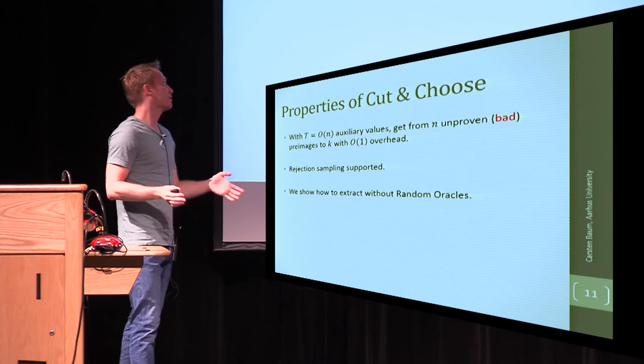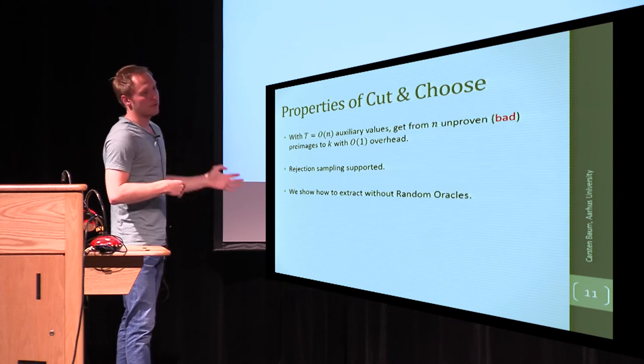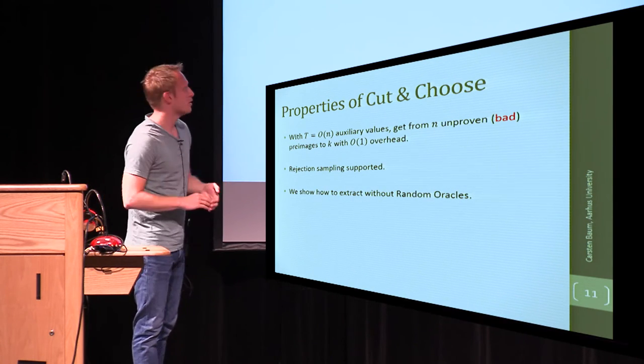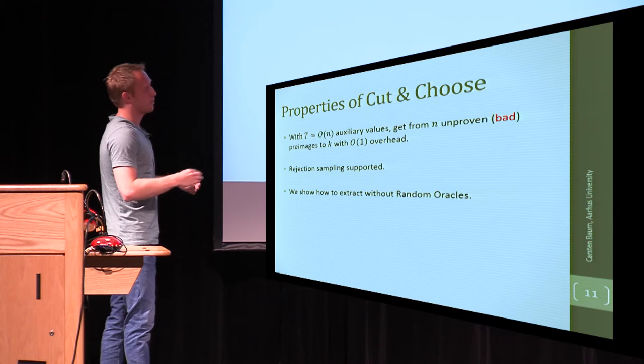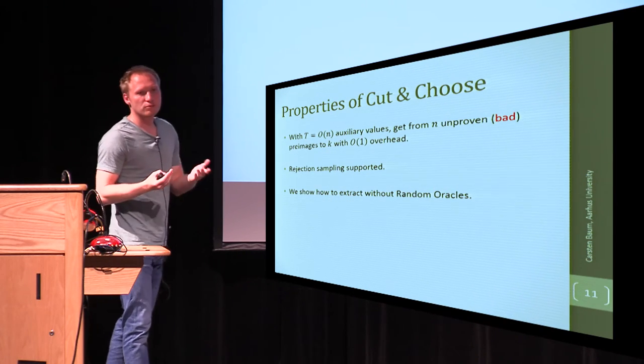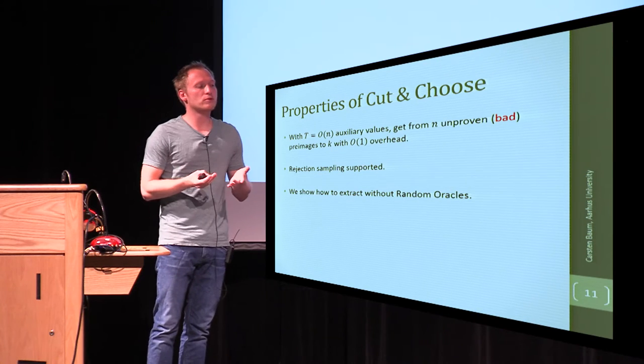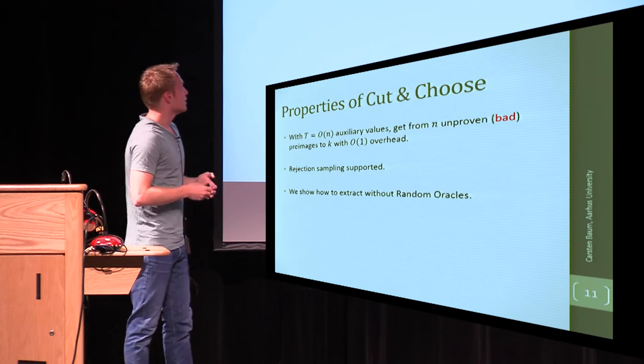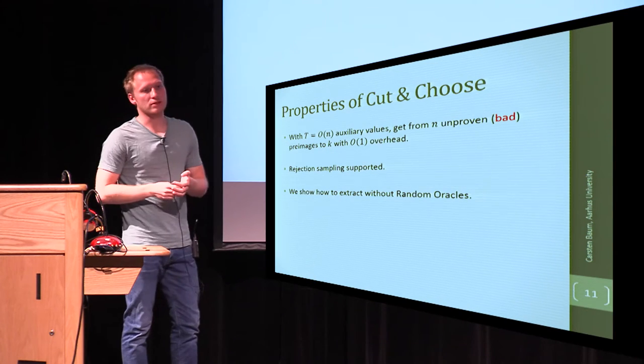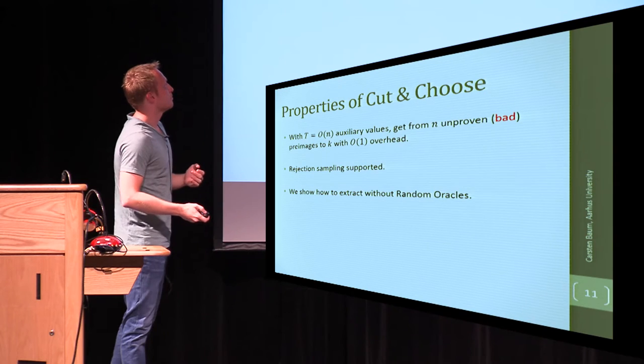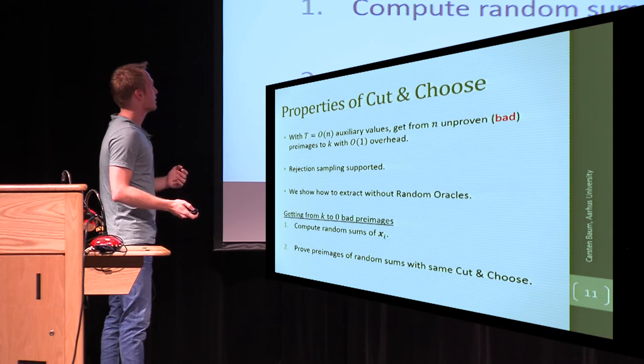And what we show in our work is that if you set this t to be 3 times n, so linear in the number of values you want to prove knowledge of, then everything is fine. In normal cut-and-choose, you would set t to be 2n, but we have to do some rejection sampling in order to keep the slack small, and we cope for the rejections by having this t to be a little bit larger. And in addition, we show that in the work in SPDZ, they need to assume random oracles in order to be able to extract, and we get around this using some interesting techniques.